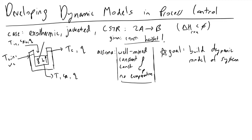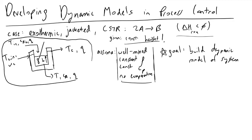What we're going to be looking at is an exothermic jacketed CSTR in which we have two moles of A reacting to form two moles of B. Because this is an exothermic reaction, heat is being released, meaning that delta H of reaction will be a negative value. I drew a diagram: Tn is the temperature of the inlet feed, Cn is the concentration of A in the inlet feed — we're assuming there's no B in our inlet — and Q will be a volumetric flow rate. Ca will have units of moles per volume.